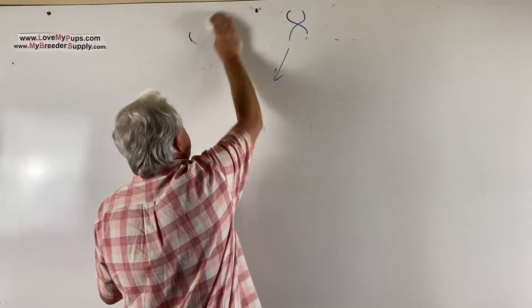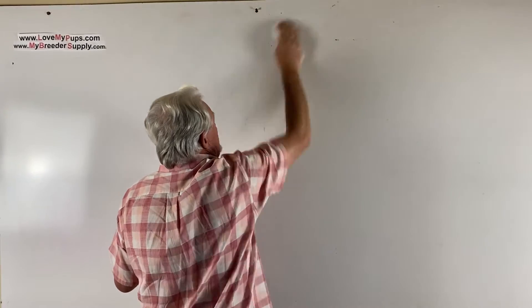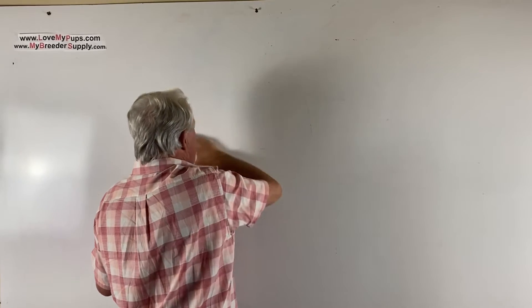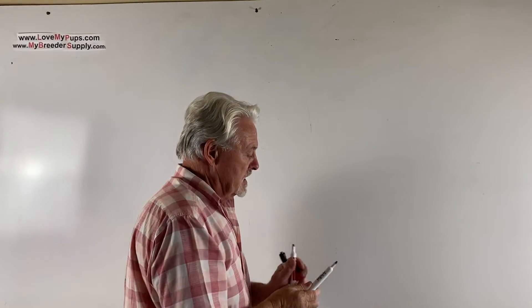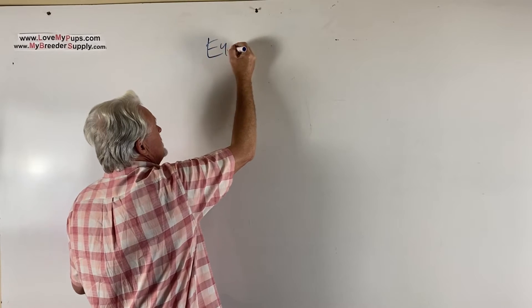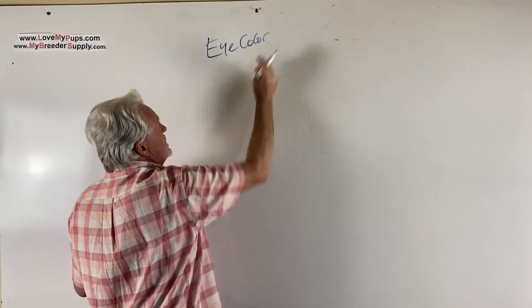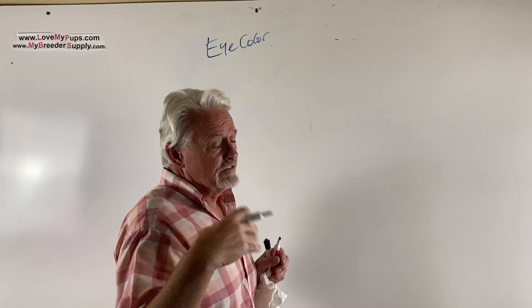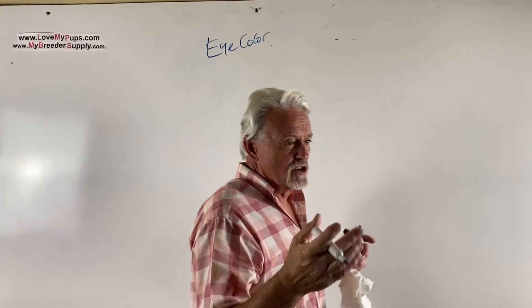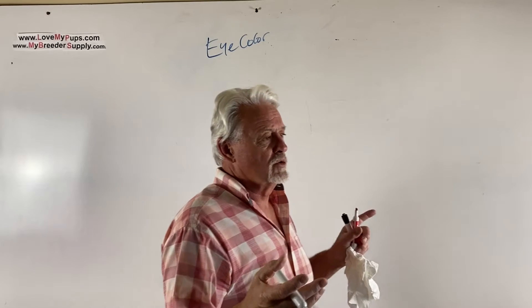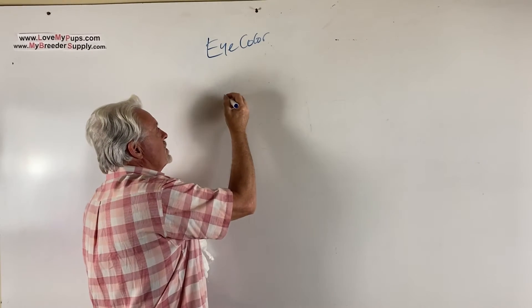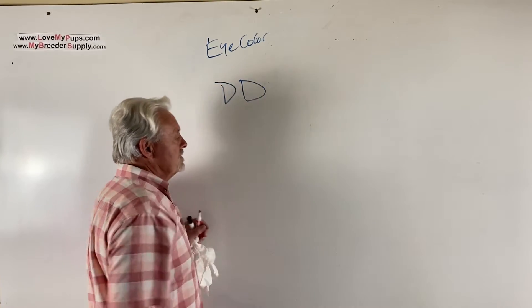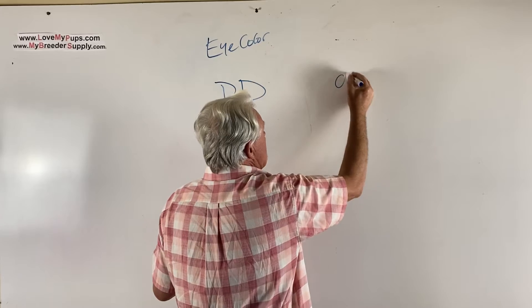So now we need to talk about recessive genes and dominant genes. And we're going to talk about a single thing we're going to talk about to start with. We're just going to talk about eye color. And in Frenchies, it'd be the blue gene. It's not eye color. It's called the dilution gene.